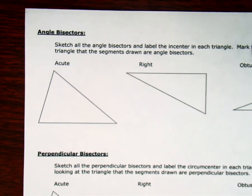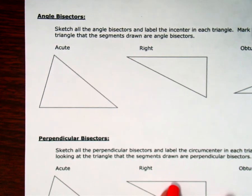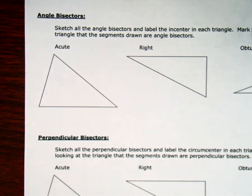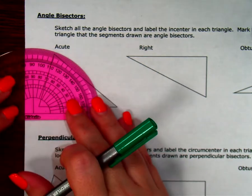This time we're going to use angle bisectors to find, see if they all intersect at the same spot. Okay, so for my angle bisectors, I am going to need to use a protractor and I'm going to have to measure each angle so that I can divide it in half.